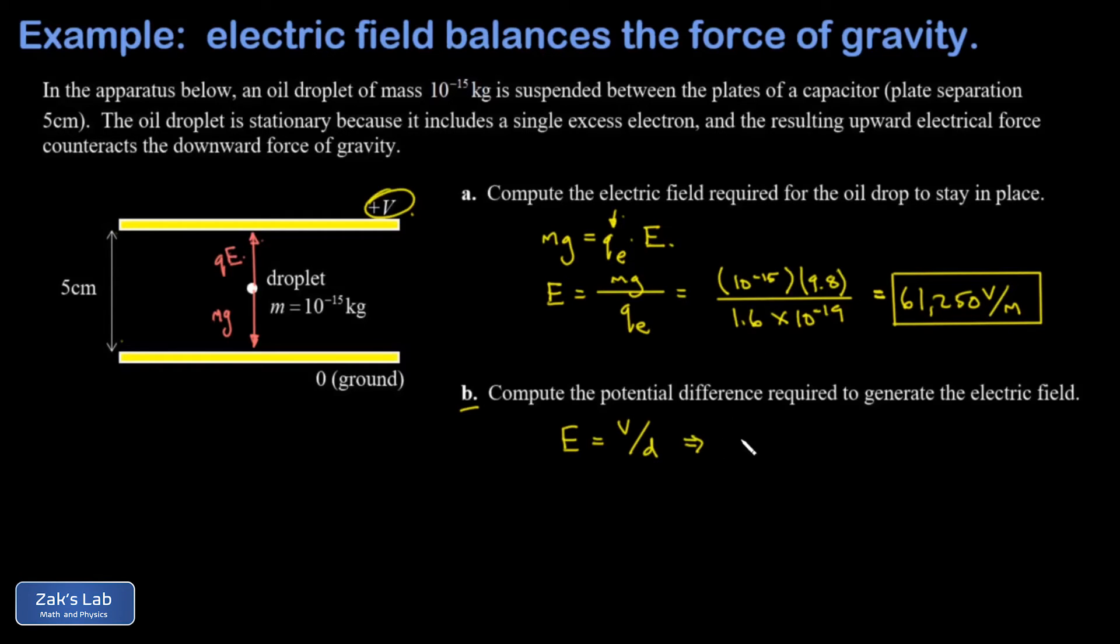So all we have to do here is solve for V, and I get V equals ED. Express those centimeters in meters as 0.05. And to three sig figs, we get 3,060 volts, or if you prefer, 3.06 kilovolts, and we're done with the problem.